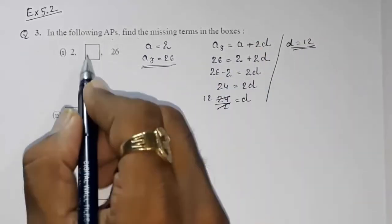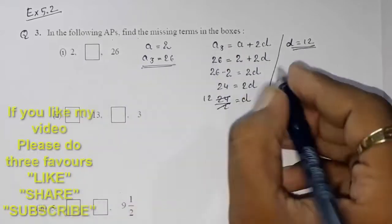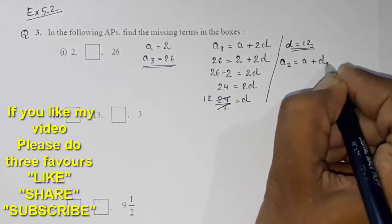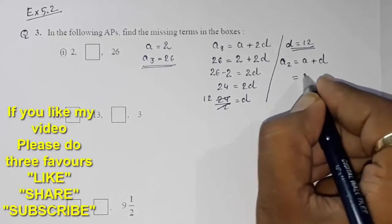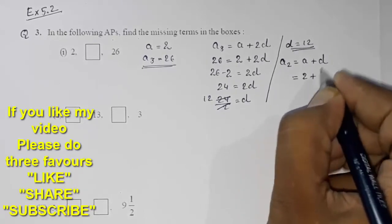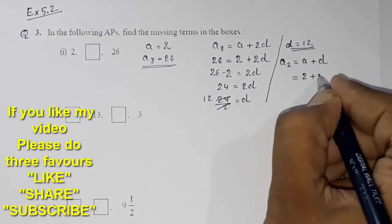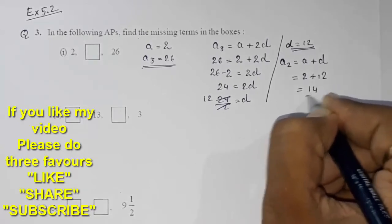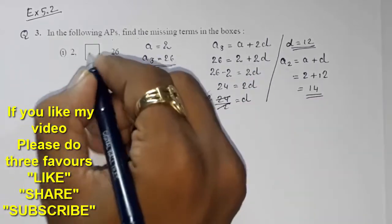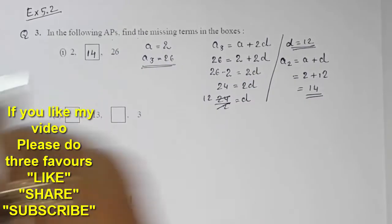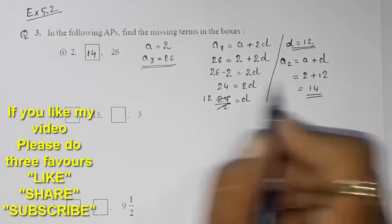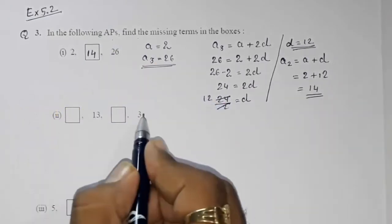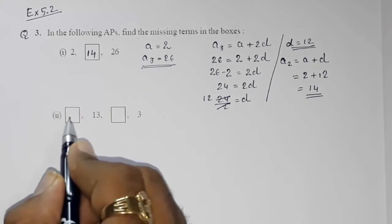Now we want the second term. a2 = a + d = 2 + 12 = 14. So the second term is 14. This is how you find the missing term in part one. Now look at part two.